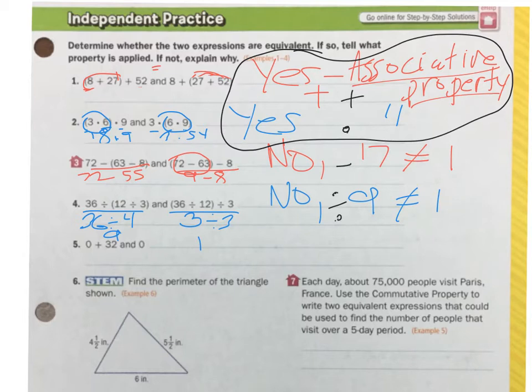Go ahead and pause, and we'll come back and do number 5. Now that you've done number 5, we have two expressions, 0 plus 32 and over here we have 0. Are they equivalent? They are not. Because 32 plus 0 is 32, and you have just 0 here. So no, 32 does not equal 0. If this side equal 32, then it would be the identity property. But because it's 0, it does not work.